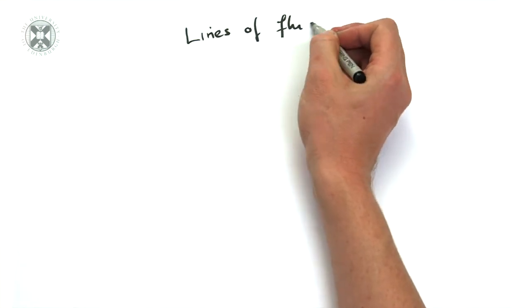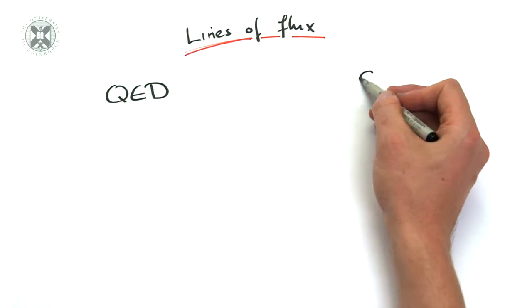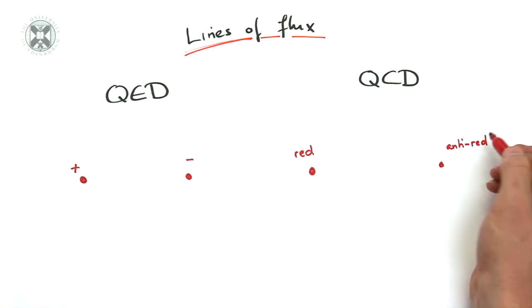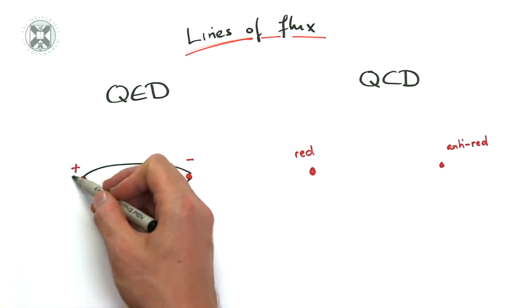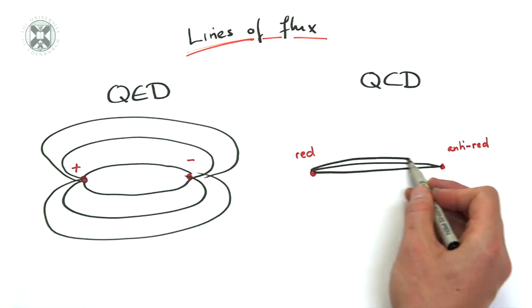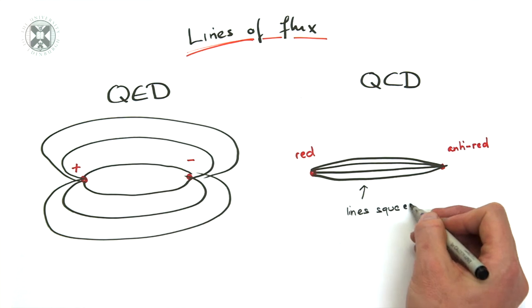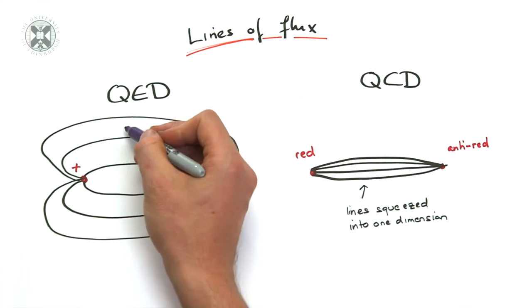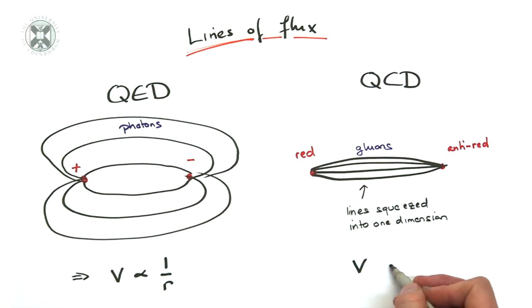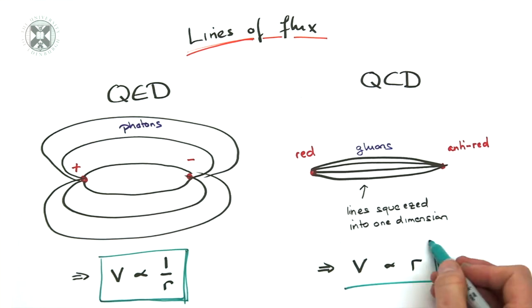At the qualitative level the lines of forces for two QED and QCD charges look as follows. The photon flux lines spread out into the entire space and therefore weaken with distance. The gluon flux lines are squeezed into one dimension and do not weaken. The force is therefore independent of the distance. This implies that the potential scales linearly with the distance, as announced at the beginning of the lecture.